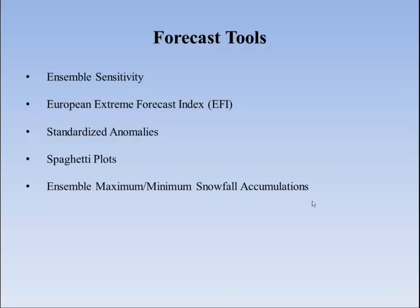Moving forward to the ensemble portion — ensembles are becoming a big item and we're going to see more of them. I'll introduce the ensemble sensitivity. The Europeans have their own way of looking at ensemble sensitivity, called the extreme forecast index. We may be more familiar with standardized anomalies and spaghetti ensemble plots. We also saw a bit of maximum and minimum snowfall in the model data and the ensemble presentations of that forecast.